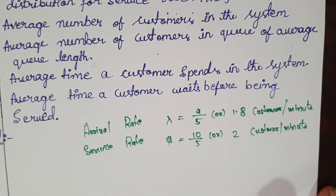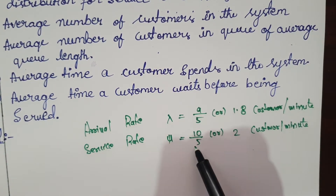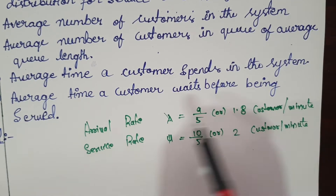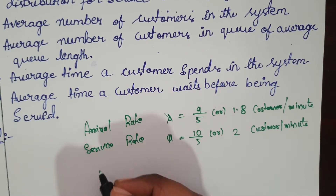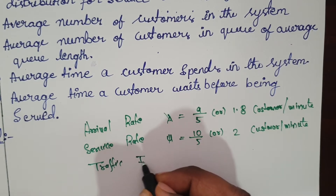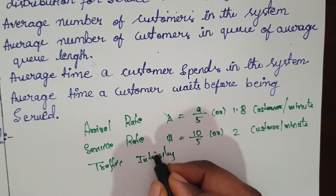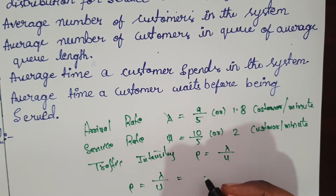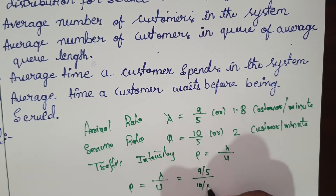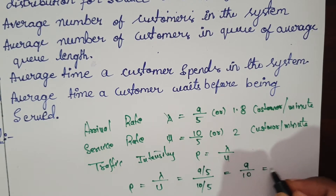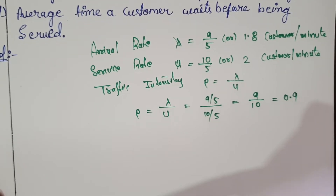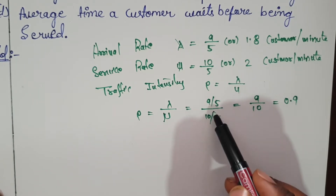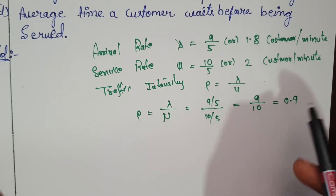The arrival rate is always designated with lambda and service rate with mu. So lambda = 9/5 and mu = 10/5. Now find the traffic intensity, which is lambda by mu. Lambda is 9/5 and mu is 10/5, so the 5s cancel and we get 9/10, which equals 0.9. Traffic intensity = 0.9.